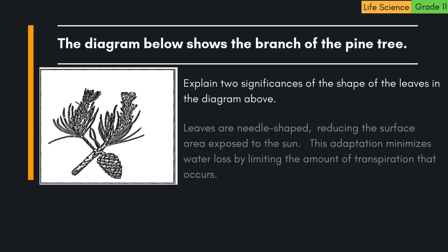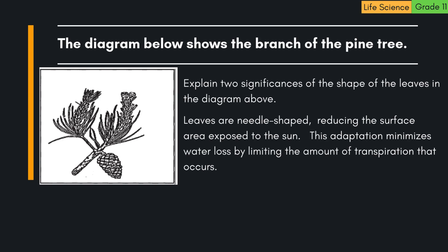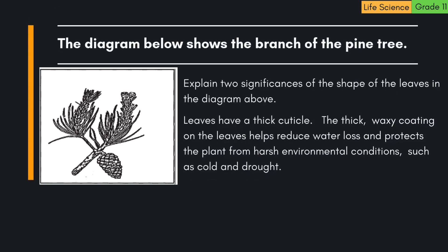Explain two significances of the shape of the leaves in the diagram. 1. Leaves are needle-shaped, reducing the surface area exposed to the sun. This adaptation minimizes water loss by limiting the amount of transpiration that occurs. 2. Leaves have a thick cuticle. The thick, waxy coating on the leaves helps reduce water loss and protects the plant from harsh environmental conditions, such as cold and drought.